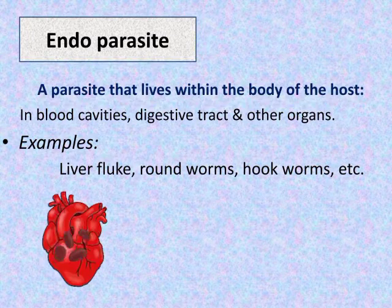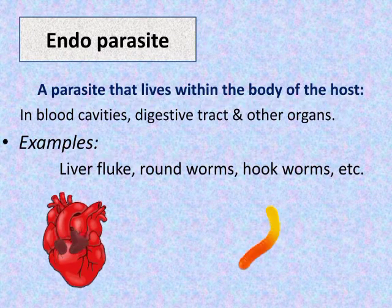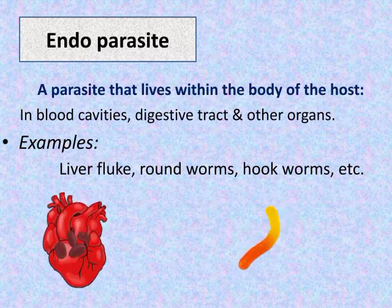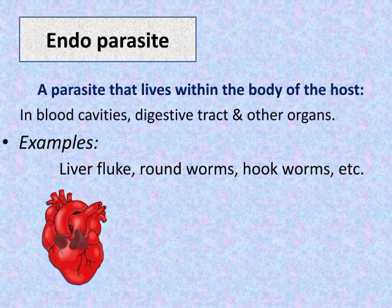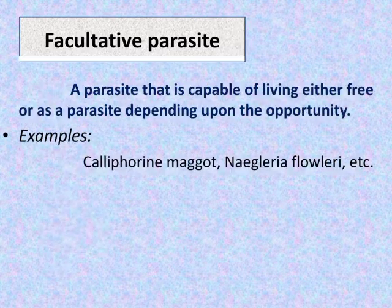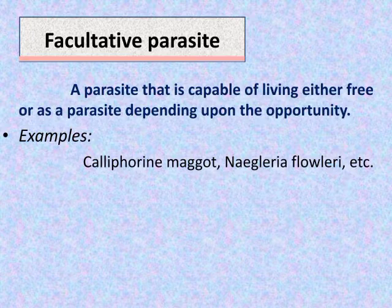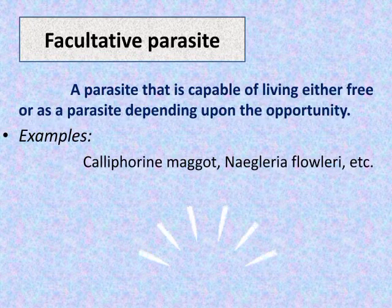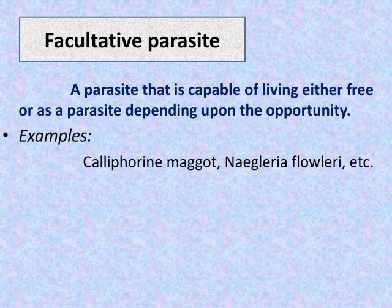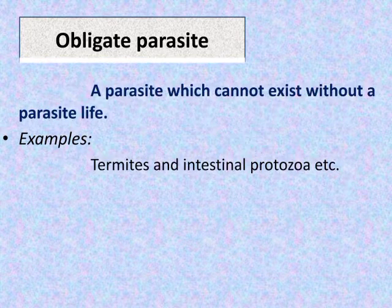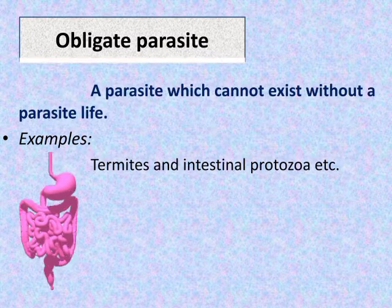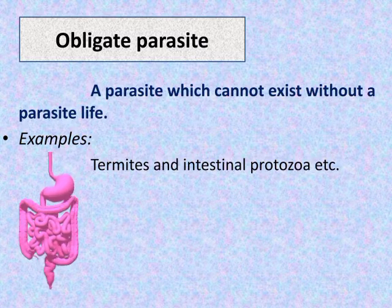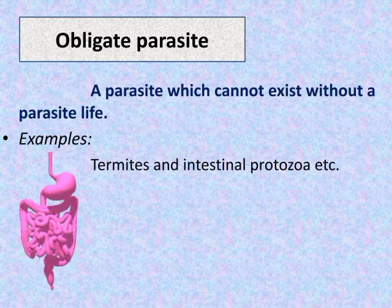Endoparasites live within the body of their host, in blood or cavities. Examples are liver fluke, roundworm, and hookworm. Facultative parasites are capable of living either freely or as parasites — an example is the California maggot.